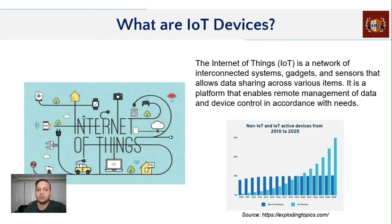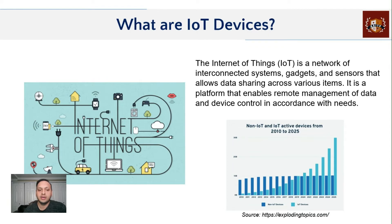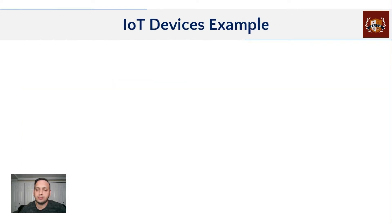Be it smart plugs to control your home systems, smart thermostats, electric cars — most household devices today, even refrigerators, have an IoT angle to them. Let's move on to the next slide. Now that we know IoT by definition, let's look at some common IoT examples.